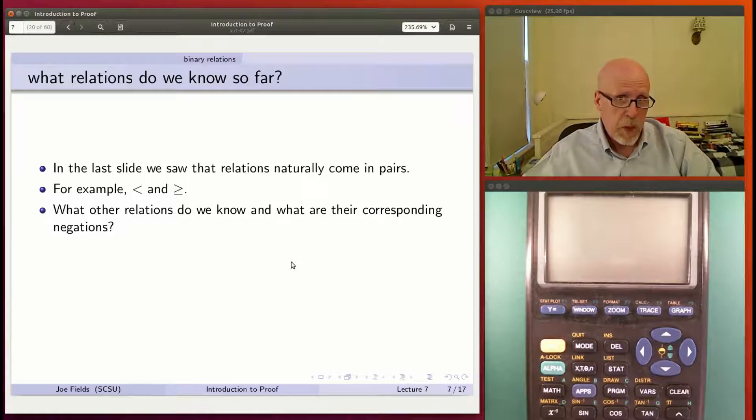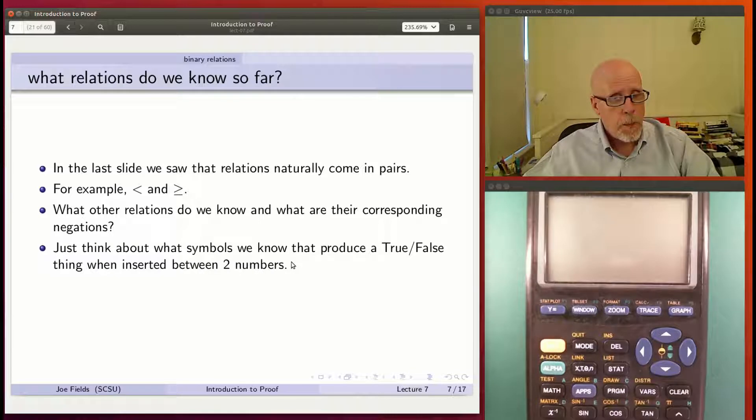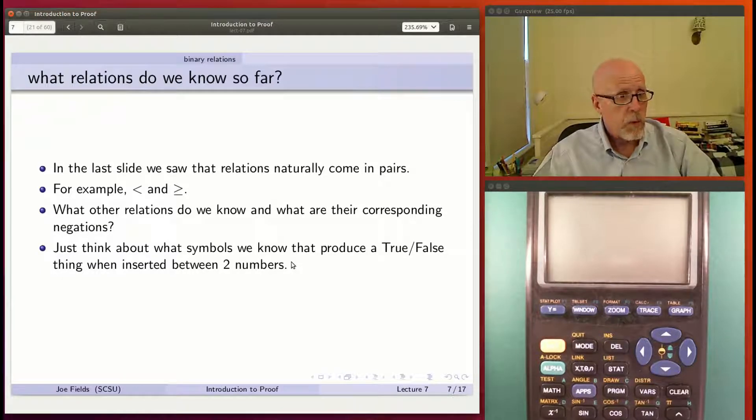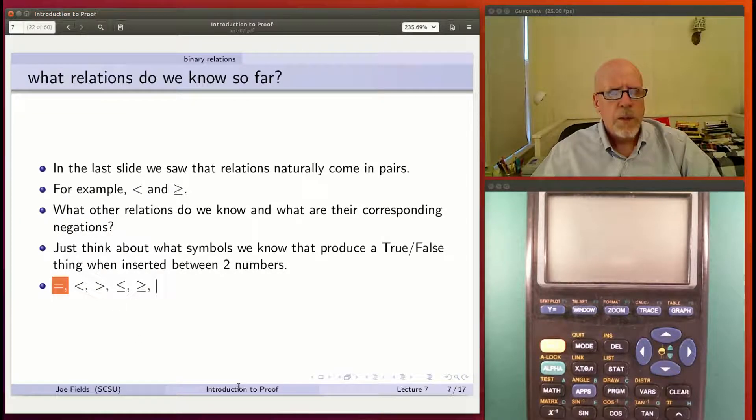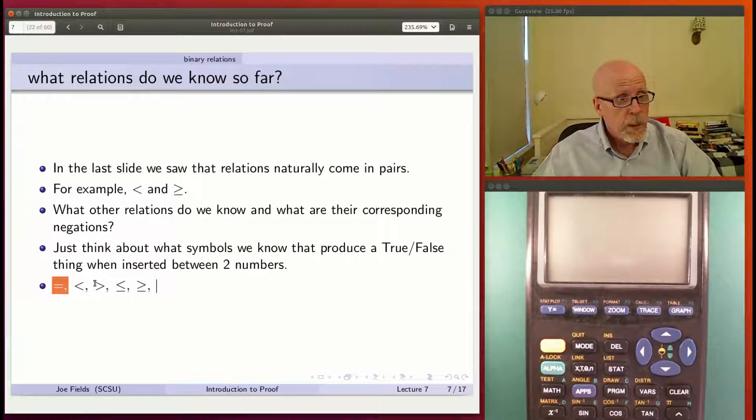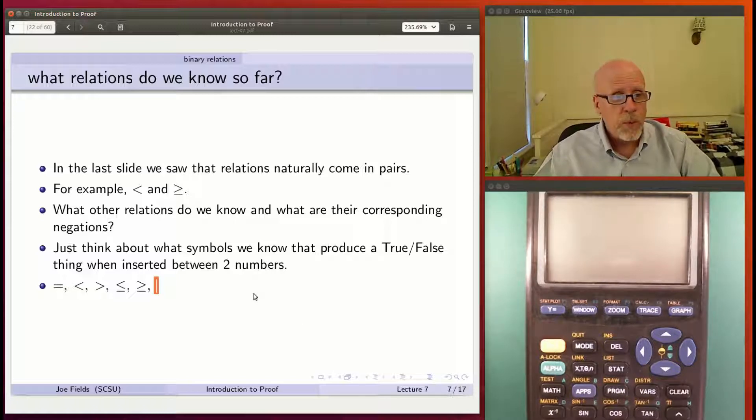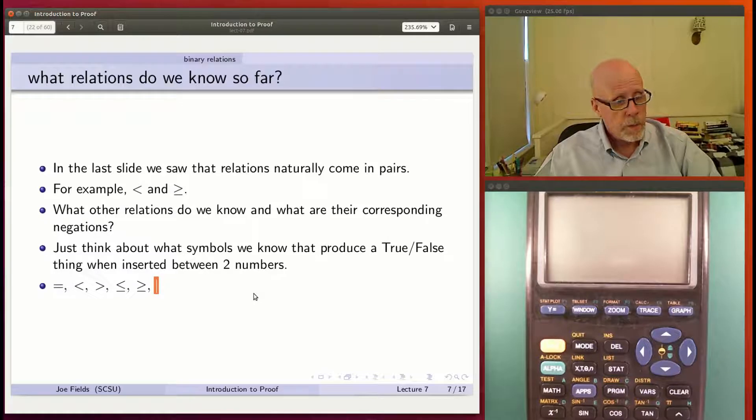For example, the ones we just looked at, less than and greater than or equal. What other relations do we know, and then what are their corresponding negations? The issue here is to think about the sorts of symbols that you can introduce between two numbers, and then you'll get something that's true or false. That kind of notation, where the symbol appears in between the inputs, is known as infix notation. There is occasionally prefix and even postfix notation for relations, but infix is the most common. Here are a couple that we know. The equal sign, do you think of that as a relation? It is certainly a symbol that you stick in between two numbers and you either get true or false. I already mentioned less than, greater than, of course, less than or equal, greater than or equal. And this vertical bar, the divide sign - that's something you can stick in between two integers and you will get true or false.